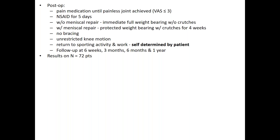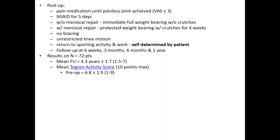Now we're going to report on the results of 72 patients. Mean follow-up was just shy of four and a half years, with as little as one and a half years follow-up and a max of seven years. The Tegner activity score is based on 10 — a score of six or seven is a really good score. Pre-op, our Tegner score was 6.8; post-op it was 6.0. That's a good score. Notably, 71% of patients returned to their pre-op score, and the difference was statistically significant with 99.9% confidence.